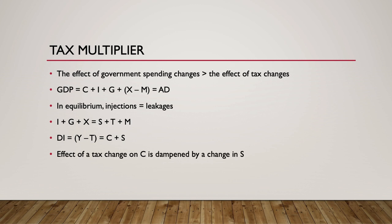When taxes increase, money is withdrawn from the economy's spending stream, and when taxes decrease, money is added to the economy's spending stream. However, the effect of a change in taxes on spending is dampened by a change in saving. When taxes increase, some of the tax paid is taken out of saving, and when taxes decrease, some of the increase in income results in a higher level of saving. To calculate the effect of a tax change, multiply the tax change by the simple tax multiplier, given as MPC divided by 1 minus MPC.